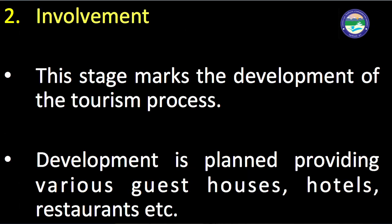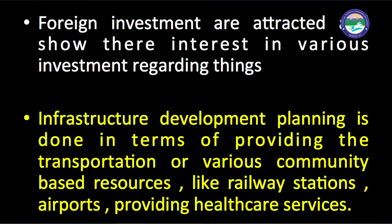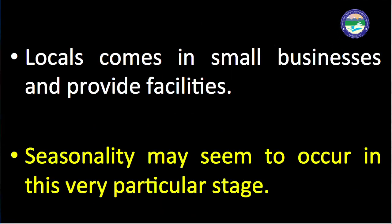The second stage is the involvement stage. This stage marks the development of the tourism process — development is planned, providing various guest houses, hotels, other lodging facilities, and restaurants. Foreign investment is attracted in infrastructure development. Planning is done in terms of providing transportation and community-based resources like railway stations, airports, and healthcare services. Locals set up small businesses to provide facilities to upcoming tourists, and seasonality may begin to occur.